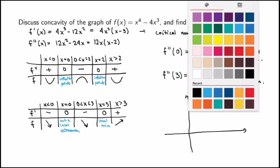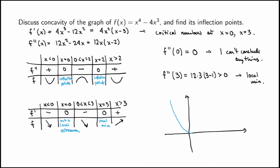With this information we can sketch the function. There is a local min at x = 3 where the function value is −27. There is an inflection point at x = 2 where the function value is −16, and another inflection point at the origin x = 0 — which turns out not to be a local extremum even though the tangent line there is horizontal.